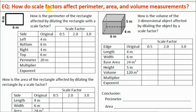We've already talked about scale factors in previous units, and we've already seen how scale factors affect perimeter and area. We're going to be adding to this — what does a scale factor do to the volume of a three-dimensional shape? These first two tables are going to be review, and I'm not going to fill those completely out. I'll do some of the work and have you fill in the missing numbers. First question: how is the perimeter of the rectangle affected by dilating the rectangle with a scale factor?